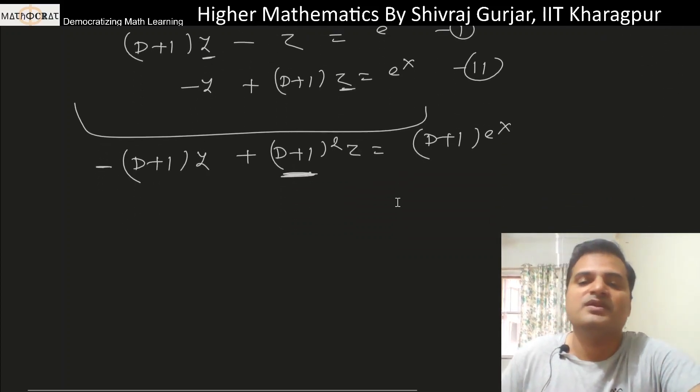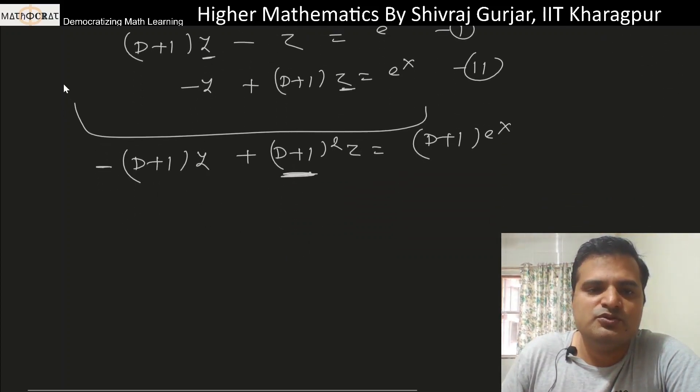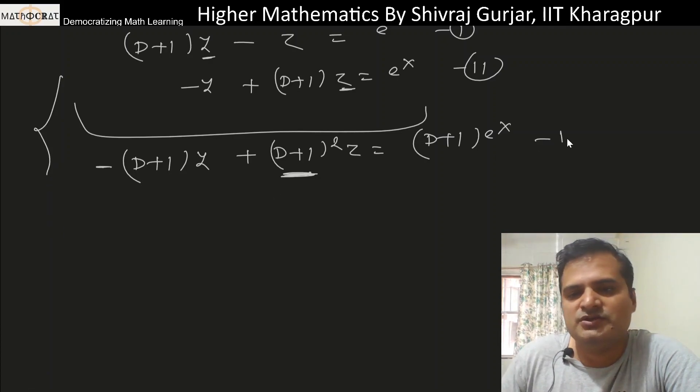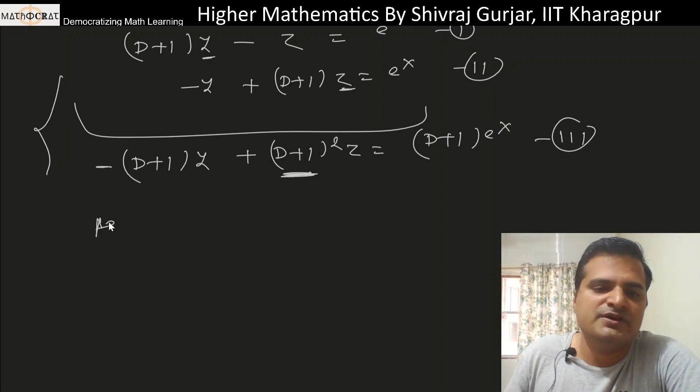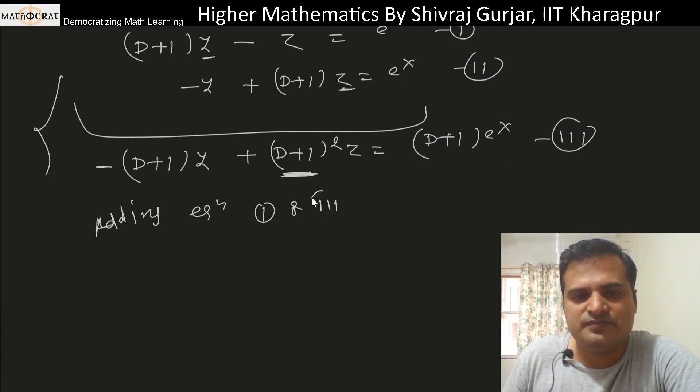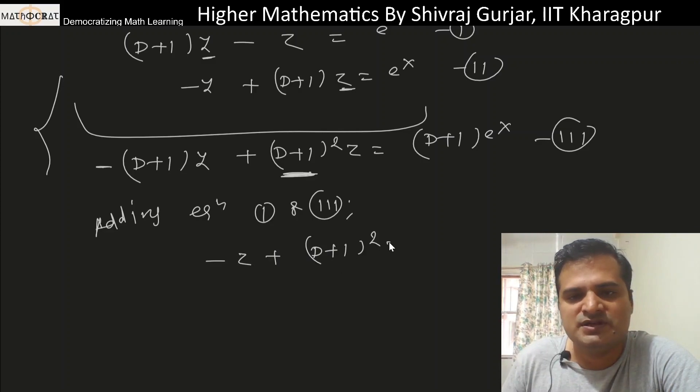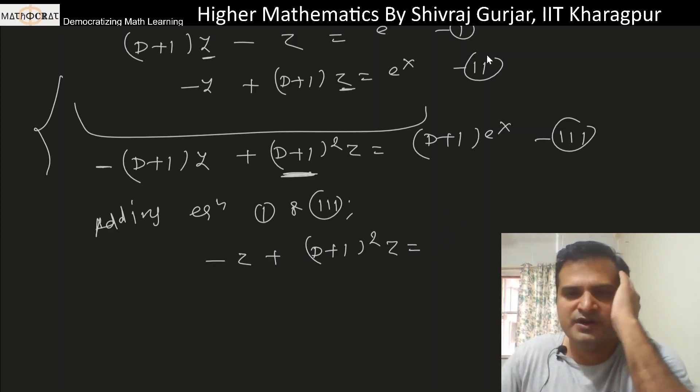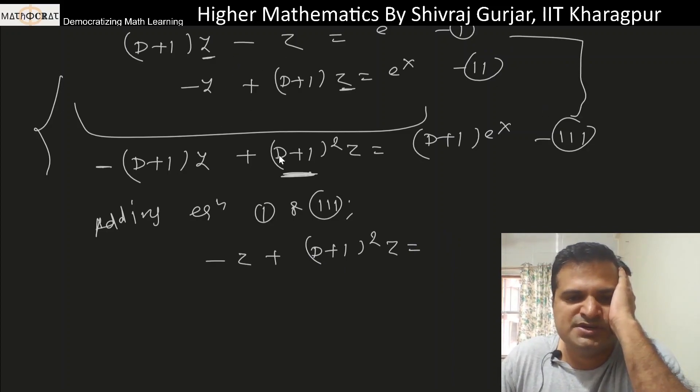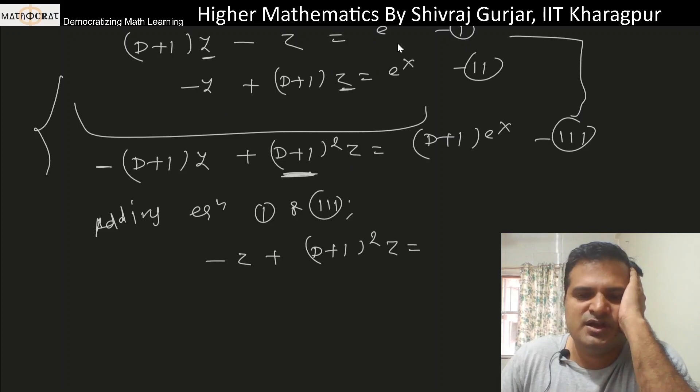Now, if we add both equations - let's call this equation 3 - adding equation 1 and 3, this part gets cancelled. So -z + (D+1)²z equals e^x plus (D+1)e^x, which is e^x plus e^x - that's 2e^x total.